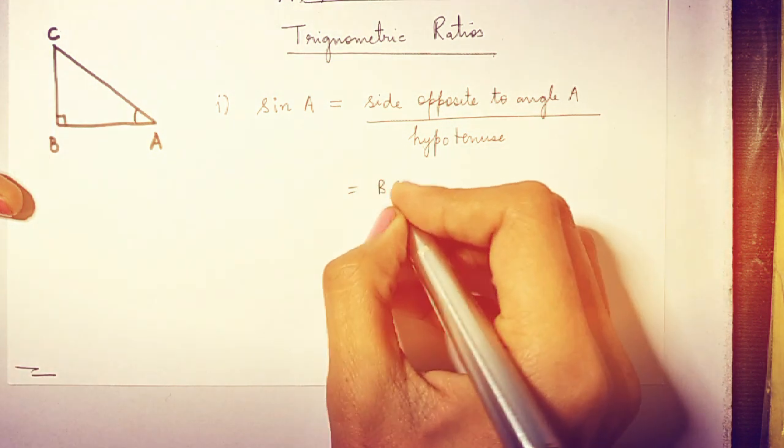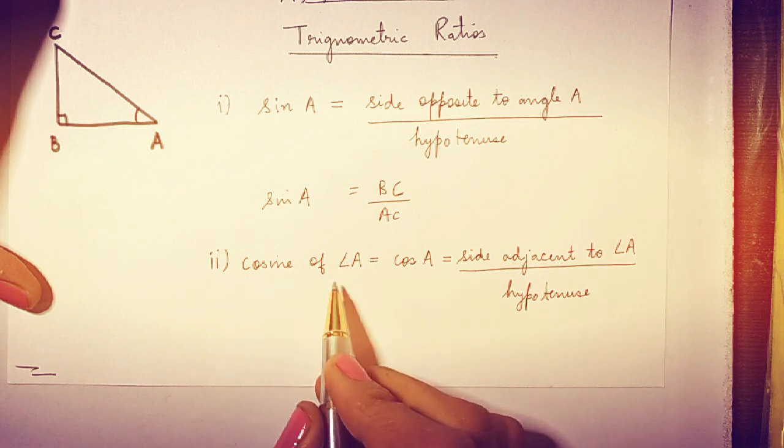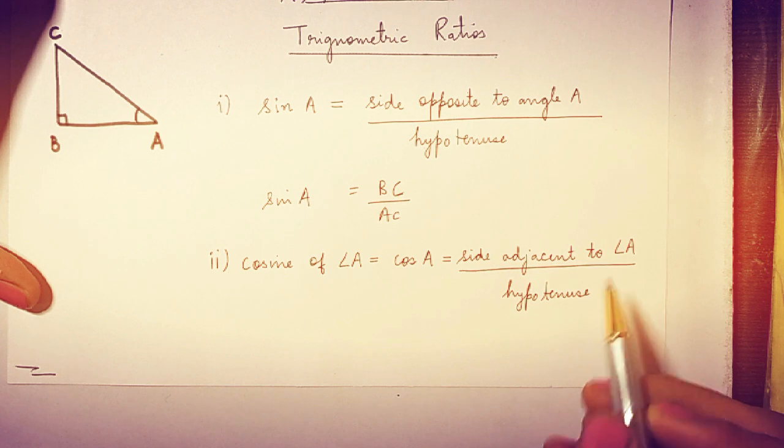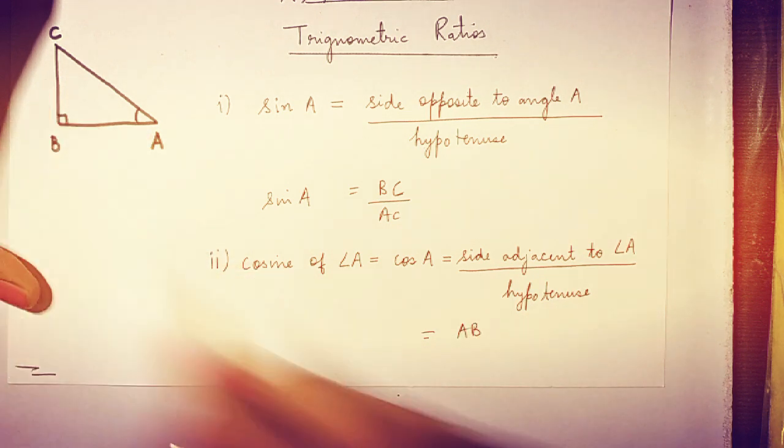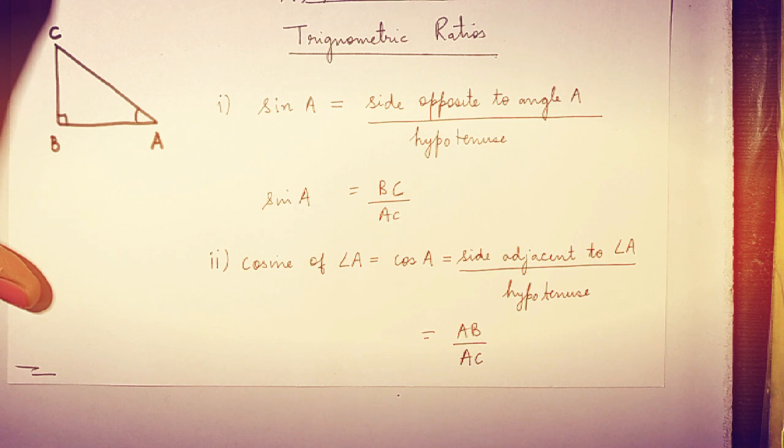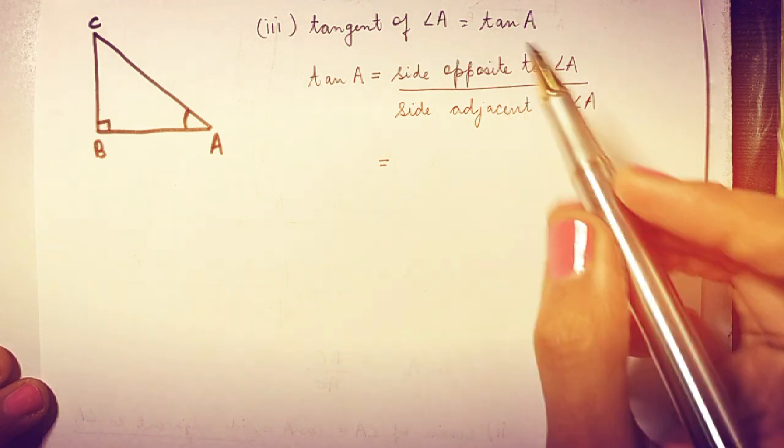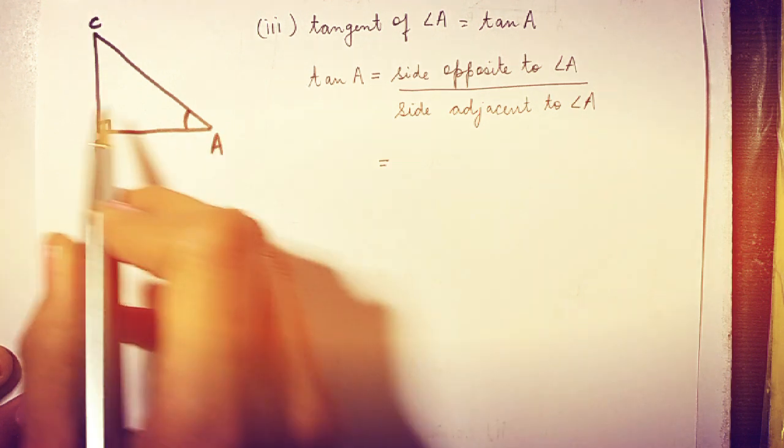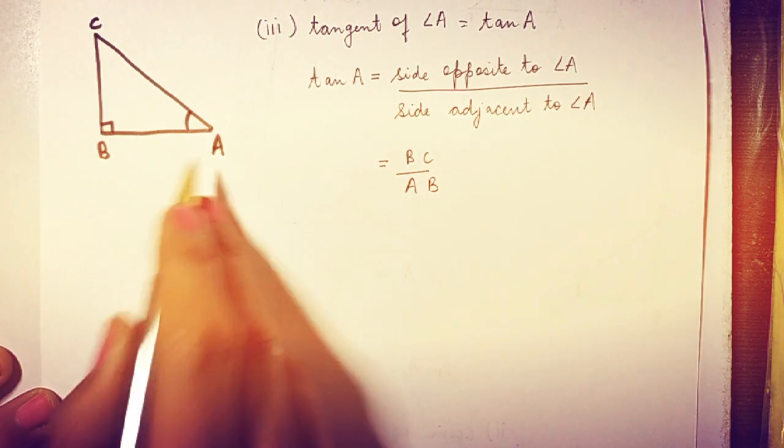Now the second is the tangent of angle A, and we can say tan A. It is the ratio of side opposite to angle A divided by side adjacent to angle A. So the opposite side is BC and the adjacent side is AB. So BC upon AB is your tangent A.